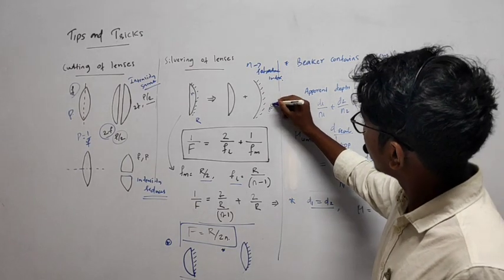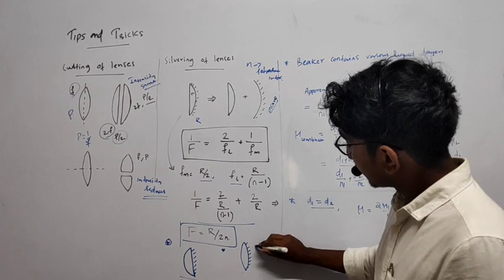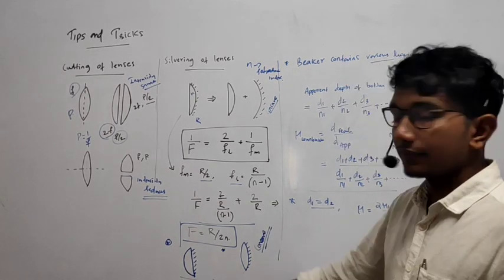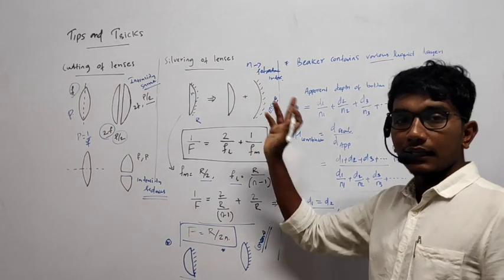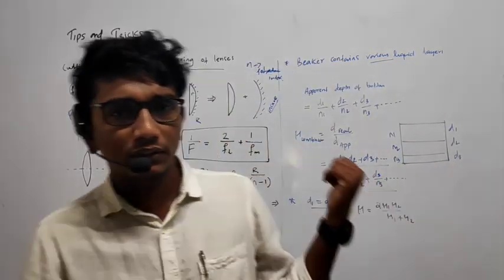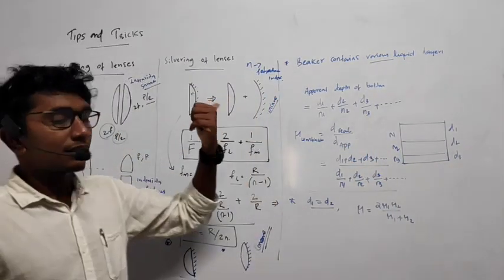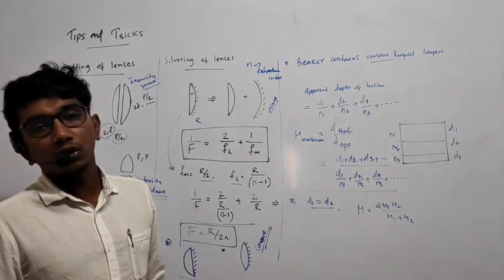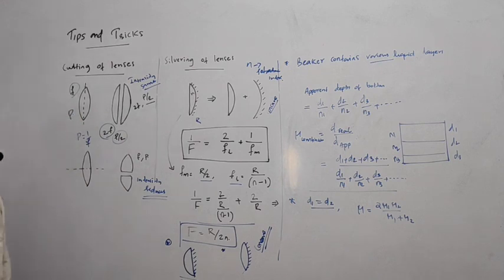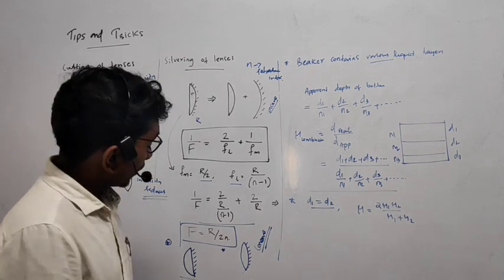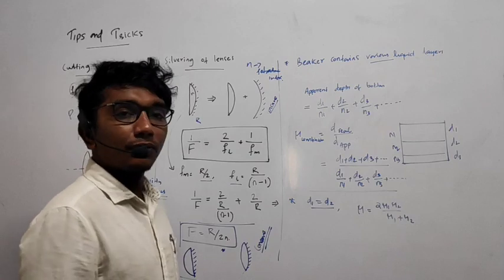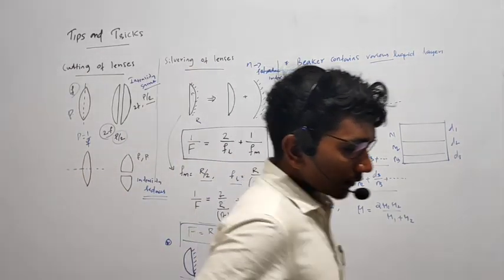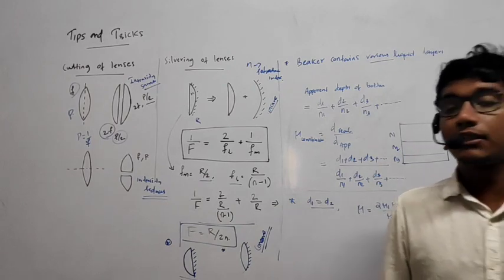Looking at the example configurations: there is a case with a concave mirror, then a plano-convex lens, then a bi-convex lens with a concave mirror. I want to clarify — this silvered surface is concave, not convex. So this is called concave. That is silvering of lenses.